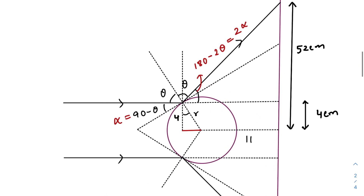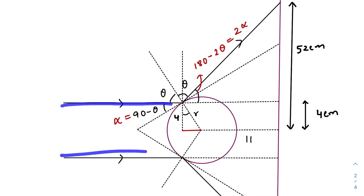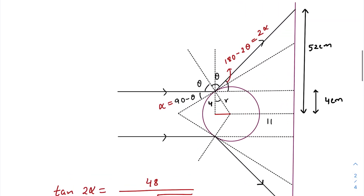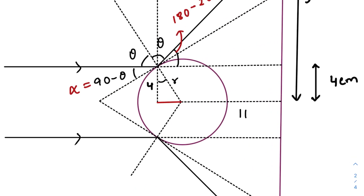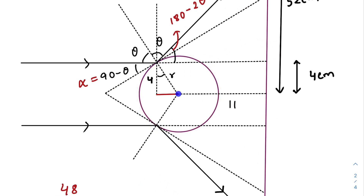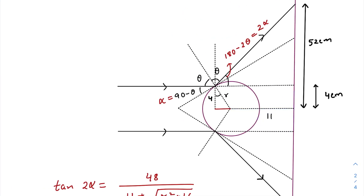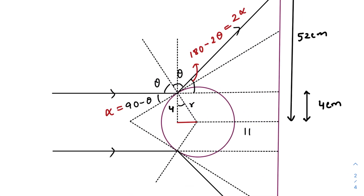It would be easier if we just see the ray diagram first. According to the question, there is a parallel beam of light. If this reflecting spherical mirror was absent, this parallel beam would have created a circular spot of radius 4 centimeters. But when this mirror is kept in the path of the beam, it reflects a lot of light, and hence this whole region — the dark shadow region — has a radius of 52 centimeters. The center of this spherical mirror is at a distance of 11 centimeters from the wall.